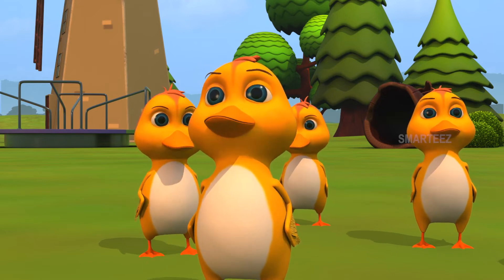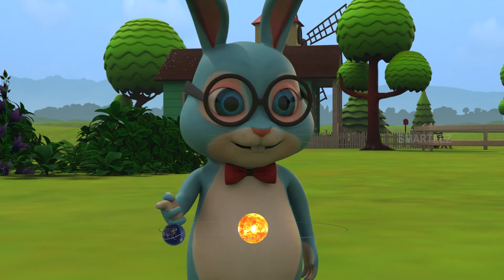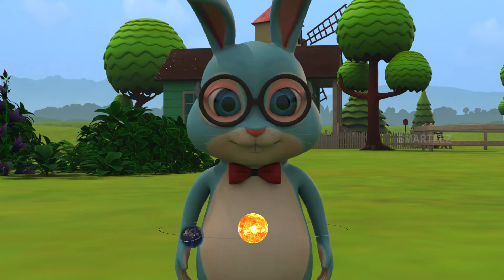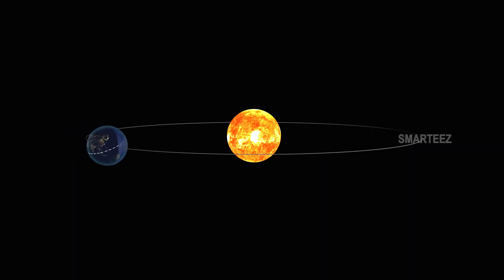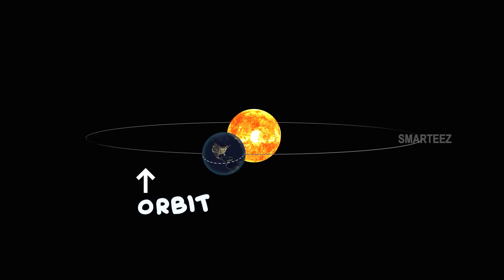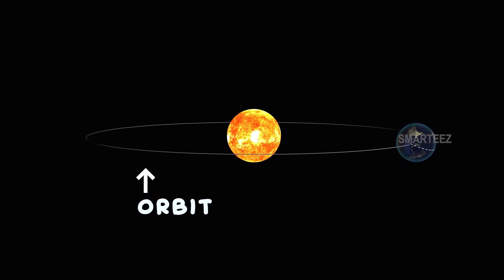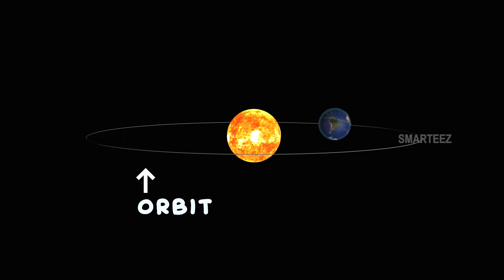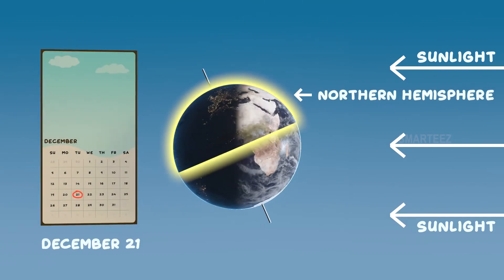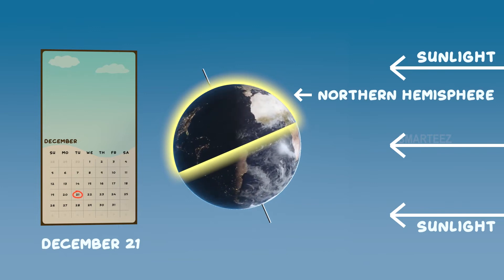This is amazing! I didn't know this at all. Well, I'll show you why this happens. Now we have the sun and the earth here. The orbit of the earth is the path taken by the earth around the sun — the revolution of the earth around the sun. As you can see, the earth's orbit is elliptical.